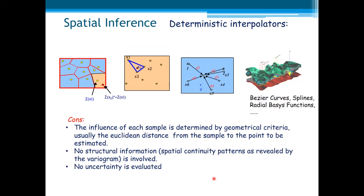So, the drawbacks. Drawbacks, we can just say that the influence of each sample is determined by just geometric criteria. Usually, they include the distance from the sample to the point to be estimated. No structural information, spatial continuity patterns, as revealed by the variograms, covariance and so on, is involved. No uncertainty is evaluated.